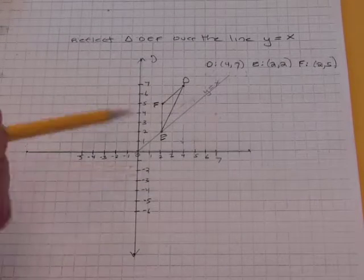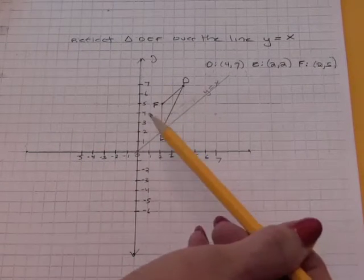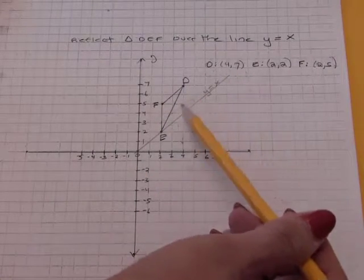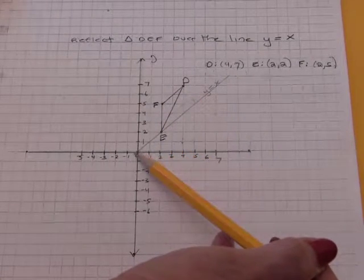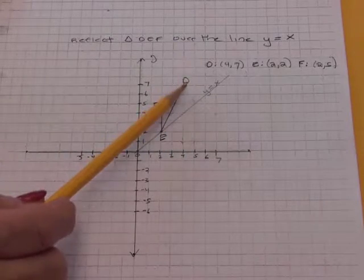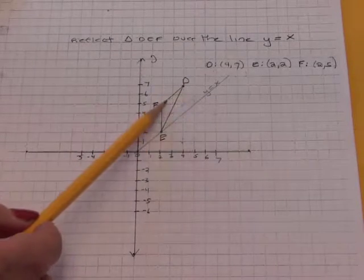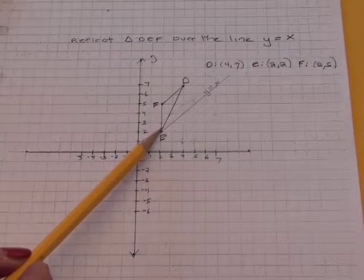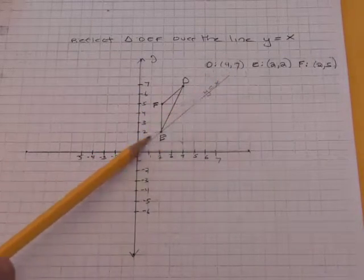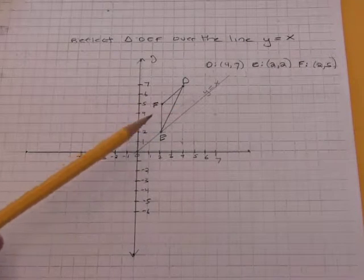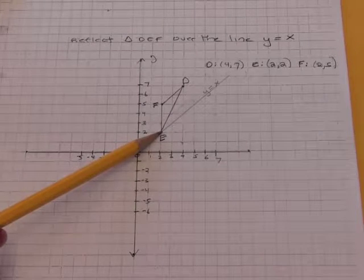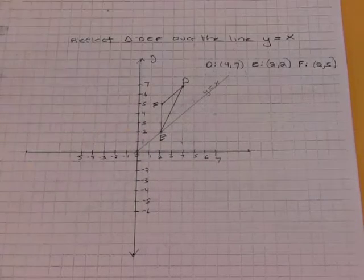The last reflection will be a reflection of triangle D, E, F over the line Y equals X. This reflection works the same way as the others, but it's not as obvious what to do to the coordinates to make sure each point is equidistant from the line of reflection as its image. Notice, however, that E is on the line of reflection, so its image will be itself.